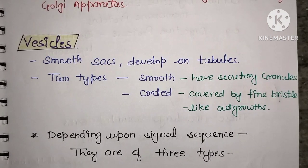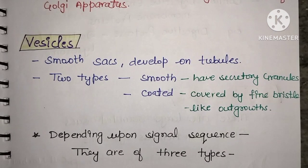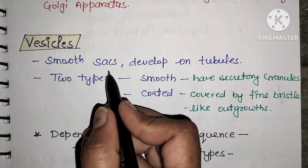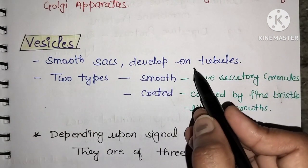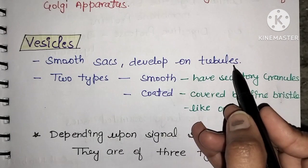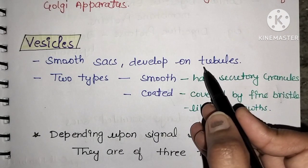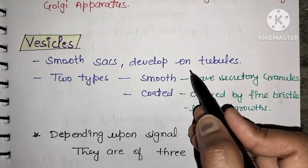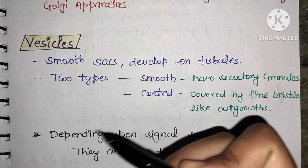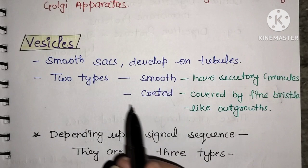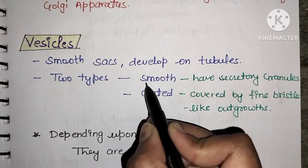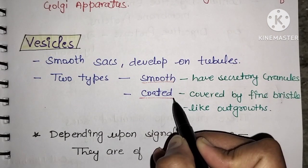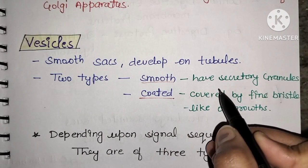Vesicles are smooth membrane sacs that bud from the tubules. They are of two types: smooth vesicles and coated vesicles.